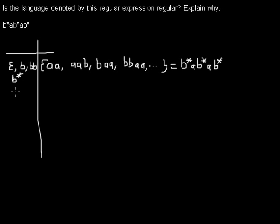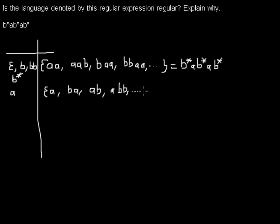Let's think about the word A. A is still not in the language because it contains one A, and the language requires exactly two A's. What I have to append to get a word in the language is one more A. Or I could append a B and an A, or first an A and then a B, or one A and two B's. Summing this up, I would have to append any word that contains at least one A somewhere, with any number of B's before or after — since only the A's matter.